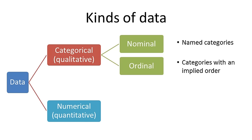Both of these kinds of data are in categories. Nominal is when they're just named. Ordinal is when there's some kind of implied order.